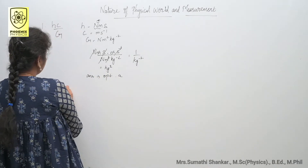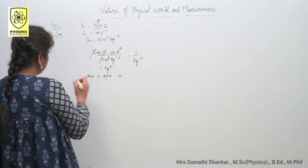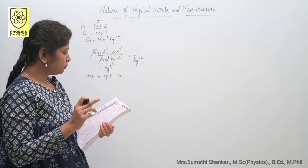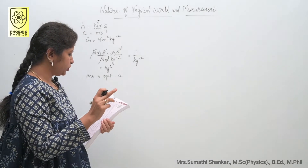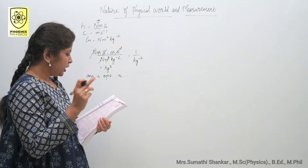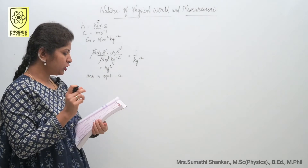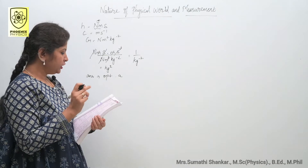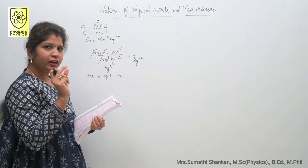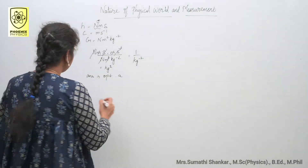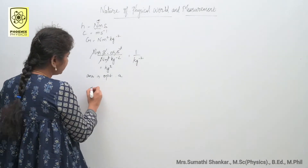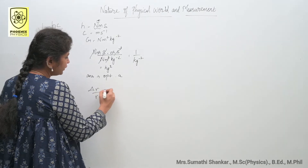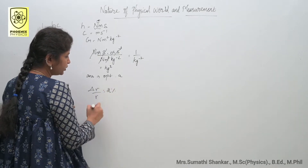Second question: if the error in the measurement of radius is 2%, then the error in the determination of the volume of the sphere will be. Here the error in the radius is given, which is delta r by r, equal to 2%.